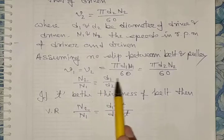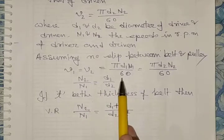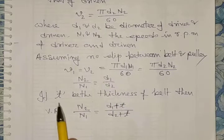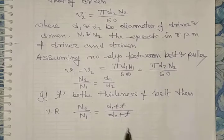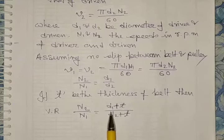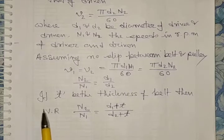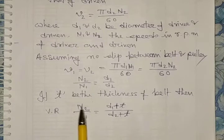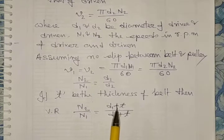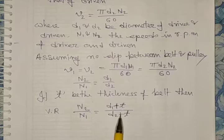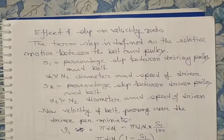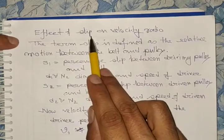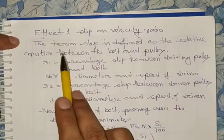That is, speed in rpm for driven divided by speed in rpm for driver equals diameter of driver divided by diameter of driven. If we consider t as the thickness of the belt, then we add thickness to each diameter. So velocity ratio VR = n2/n1 = (d1 + t) / (d2 + t), where t is the thickness of the belt.